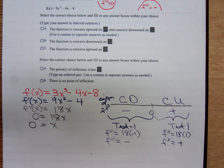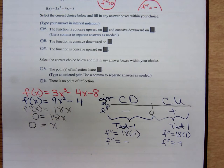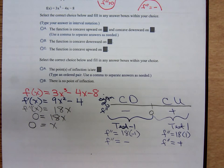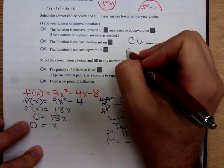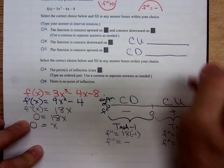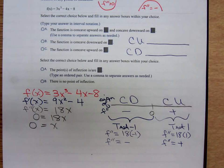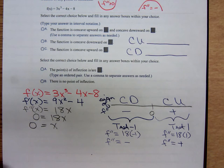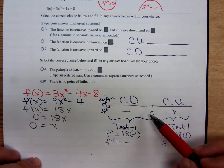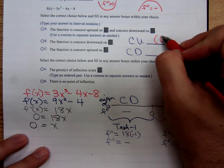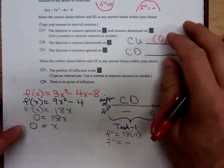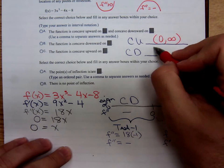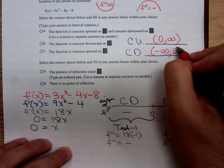We want to know which interval is the graph concave upward, and which interval is it concave downward. So, concave upward and concave downward. The graph is concave upward from 0 to infinity. The graph is concave downward from negative infinity to 0.